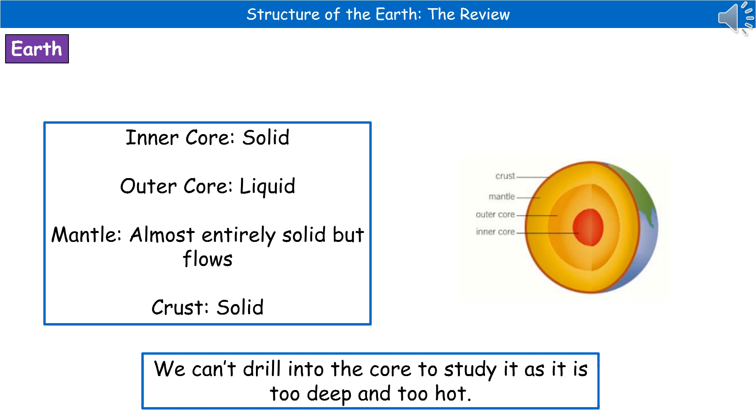First, in the very center we've got the inner core, which is solid. Then the next layer out is the outer core, which is liquid. Then we come to the mantle, which is almost entirely solid but flows. And on the very surface we've got the crust, which is solid—that's the bit we're walking around on.